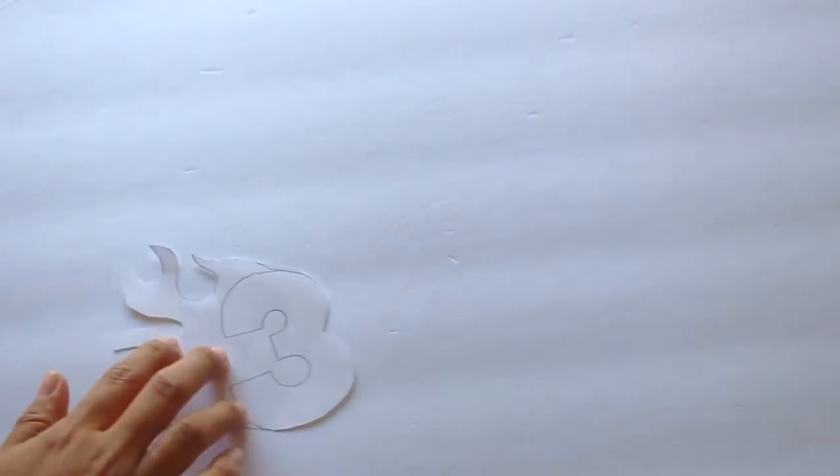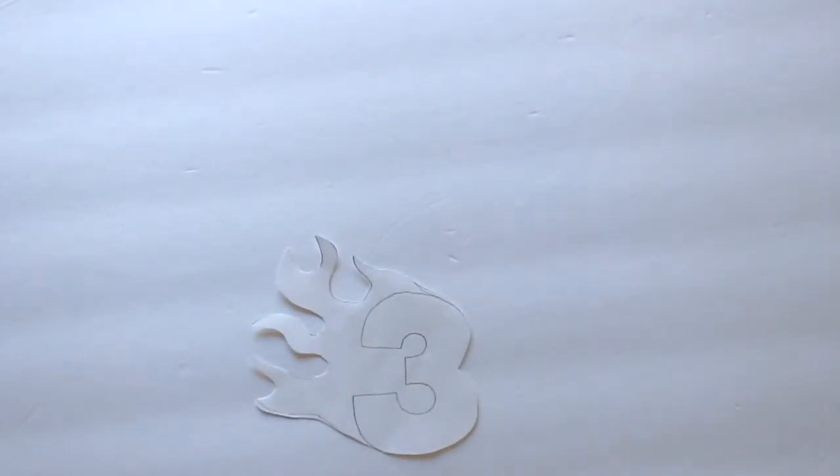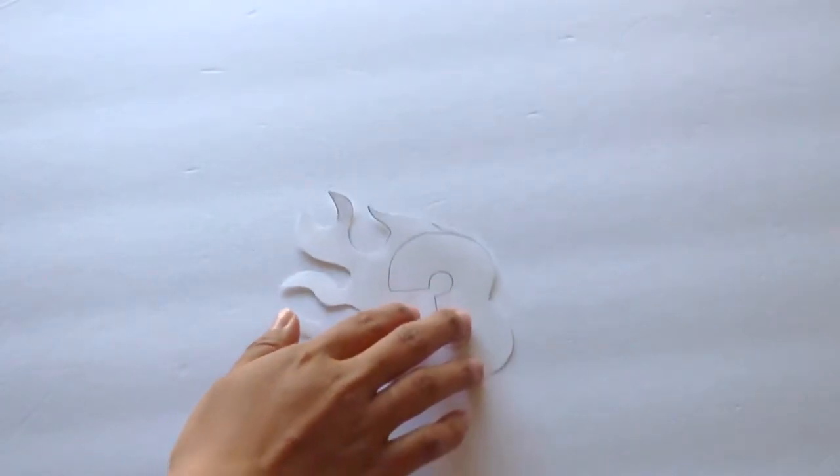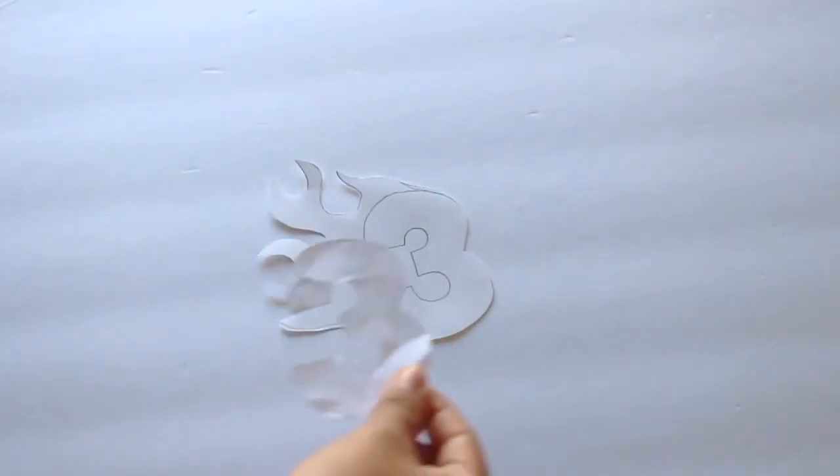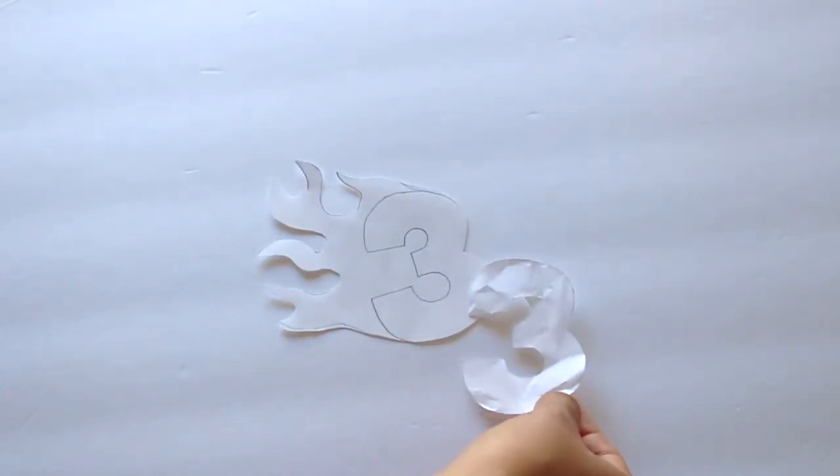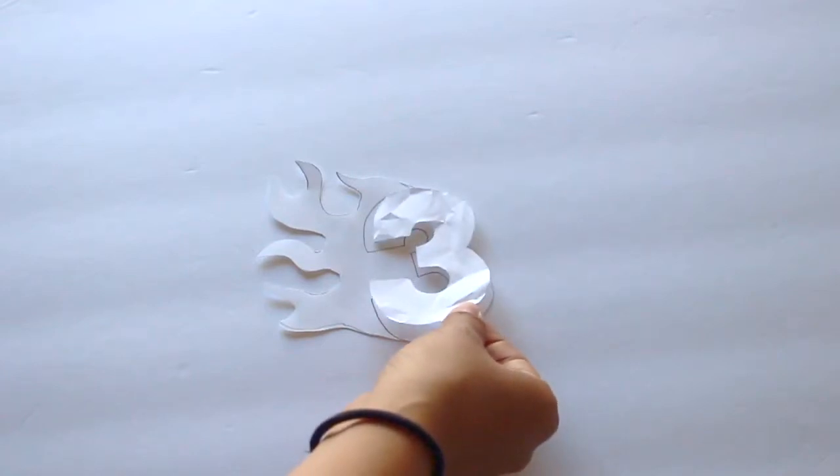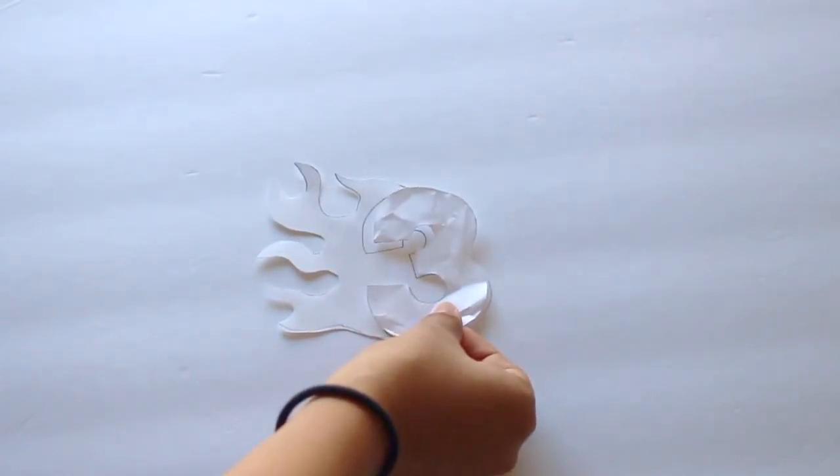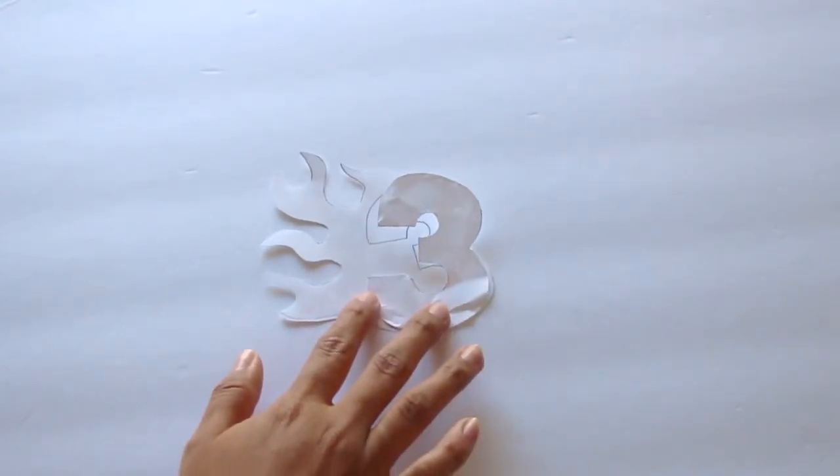First, draw on a regular piece of printing paper, or use cardstock if you want your stencil to be thicker and stiffer. Draw out your shape or design, but be aware of how intricate it is.